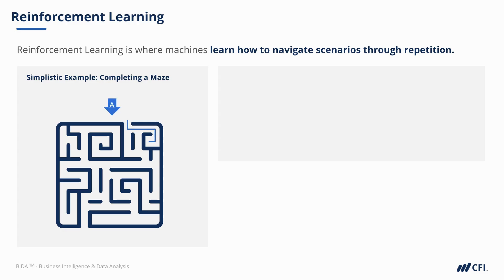Attempt A didn't go so well, but the computer will never make this mistake again. In attempt 2, the bot again learns about the second dead end. After a number of attempts, the bot understands the best route through the maze and will be successful 100% of the time.